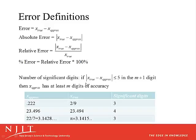When we're dealing with computations, we often will present our results, and we really don't want to present or make our results look like they are better, or worse for that matter, than they really are. We should try to present them to the number of significant digits that we're confident about. So if the absolute error is less than 5 in the (m+1)th digit, then the approximate value has at least m digits of accuracy. For example, if our approximate value is 0.222 but the true value is 2/9, which is 0.222222..., then the first three values are correct and therefore we have three significant digits.